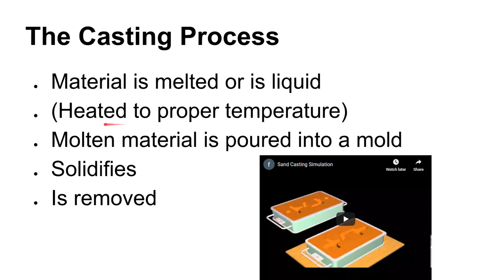In general, that's something you want to minimize — overheating the metal. You take that molten metal, pour it into a mold, it solidifies, and then it gets removed. I'm going to resist the temptation to go into more detail, because different casting processes do this differently.